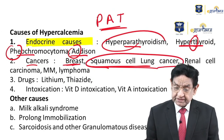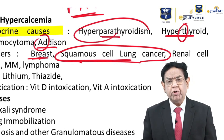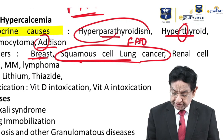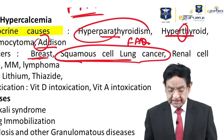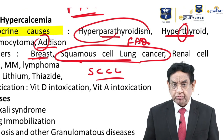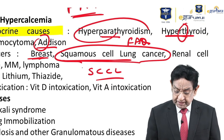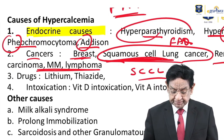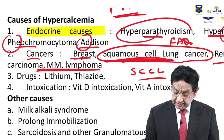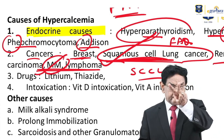Squamous cell lung cancer causes hypercalcemia, not small cell lung cancer — small cell has neuroendocrine features. Renal cell carcinoma, multiple myeloma, and lymphoma can also lead to hypercalcemia. Squamous cell lung cancer and multiple myeloma are the most important to remember.